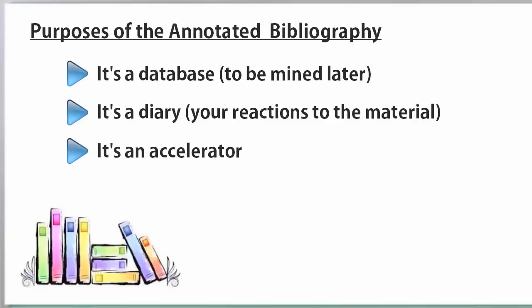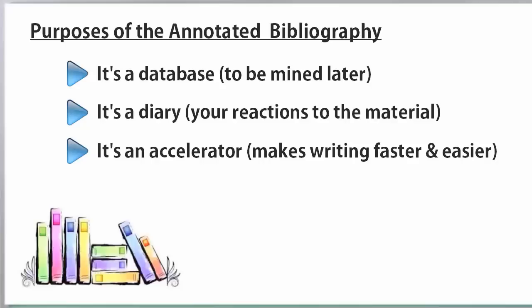Third, it's an accelerator. A good annotated bib coupled with a good outline means that the writing will almost take care of itself. You've gathered and digested all the information you need. Then, during the writing, you won't have to refine sources because you've kept good, accurate citation information.